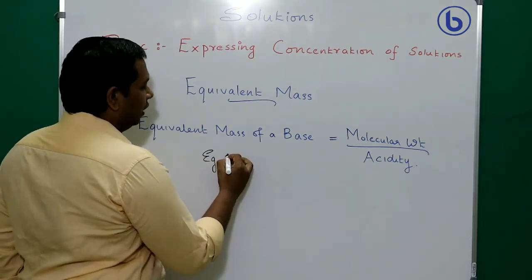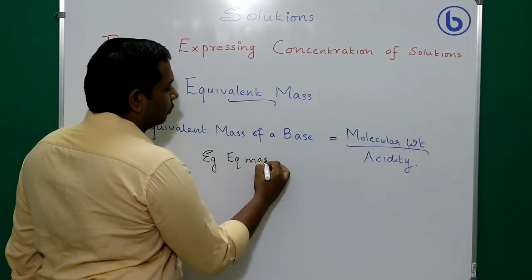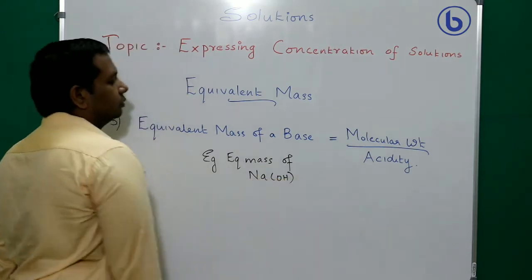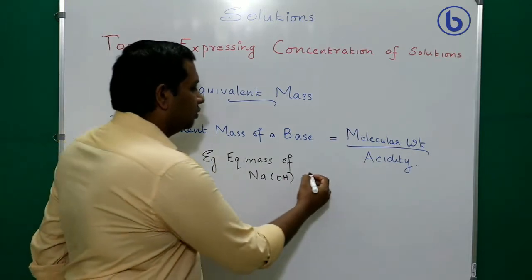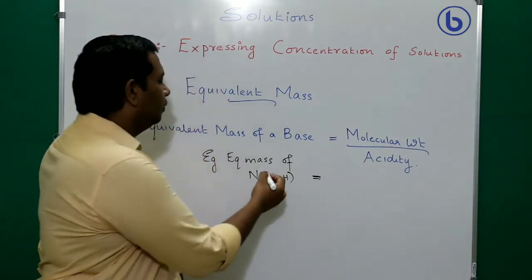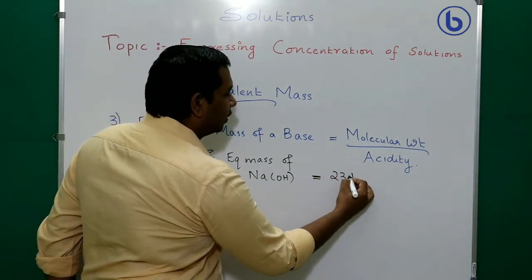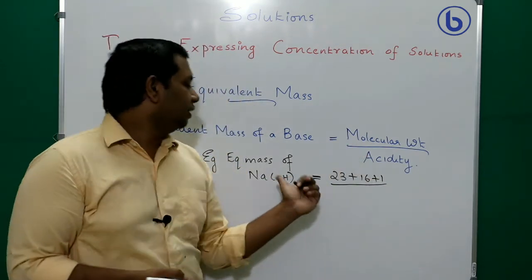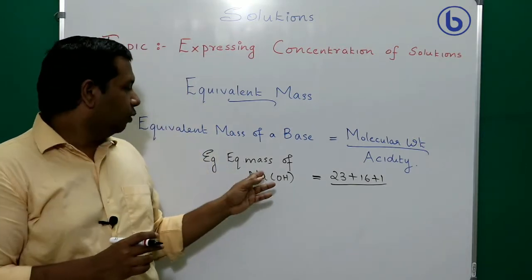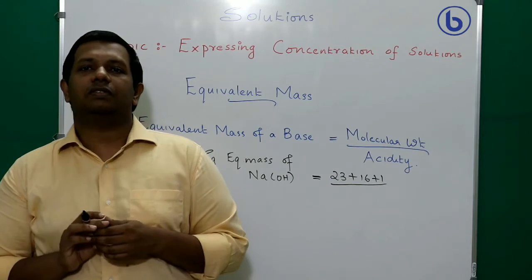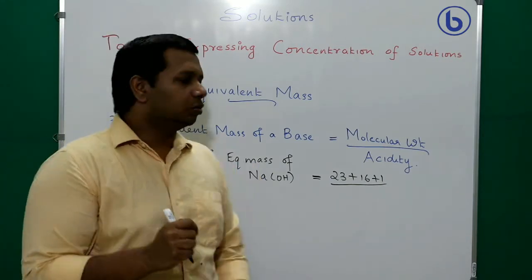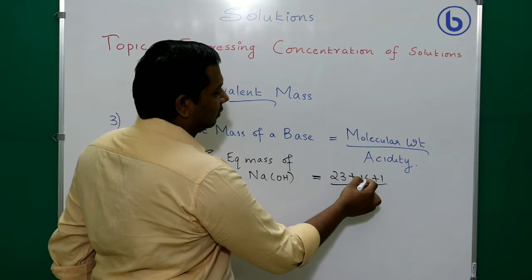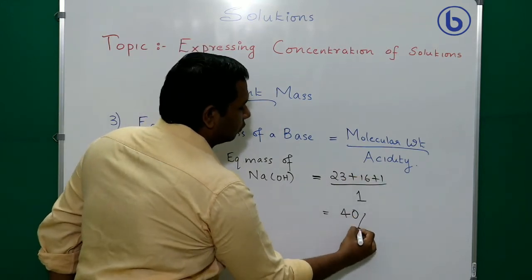Example 1: equivalent mass of sodium hydroxide (NaOH). Molecular weight: Na = 23, O = 16, H = 1; total = 40. NaOH dissociates into Na⁺ and OH⁻, so it donates only 1 OH⁻ ion — acidity = 1. Equivalent mass = 40 ÷ 1 = 40.